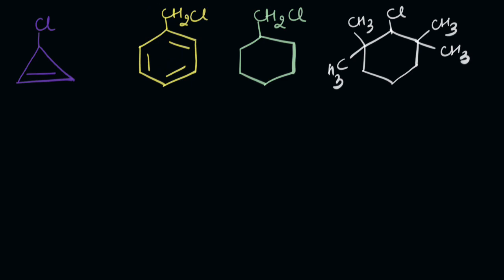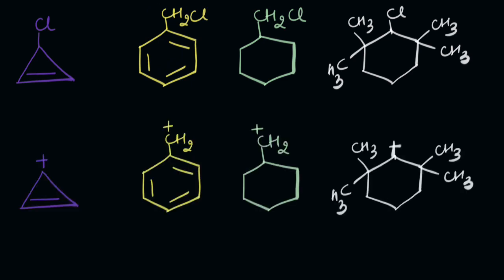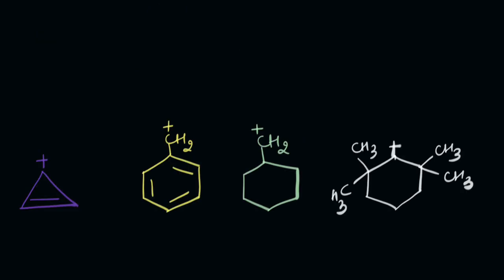So for that I'll have to break the C-Cl bond and see which carbocation would be the most stable. So let's do that. These are the carbocations so formed. Hey, why don't you write these down and try comparing the stability yourself before we do it together.